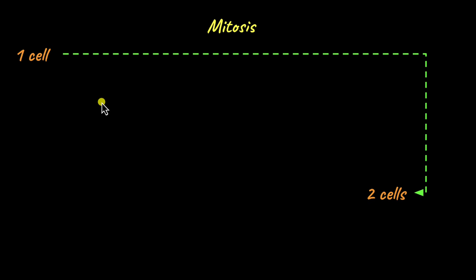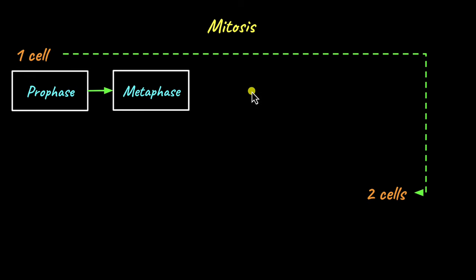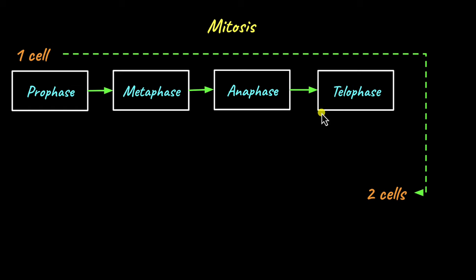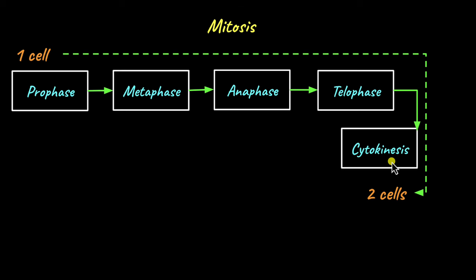There are four different phases that occur in mitosis. Mitosis begins with prophase, the next is metaphase, the next is anaphase, and the next is telophase. The actual cell division — the process by which the cell literally splits into two — occurs by the process of cytokinesis. But mitosis is the process by which one cell becomes two, so why have all these phases and why not just cytokinesis?